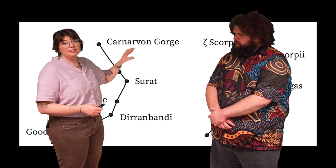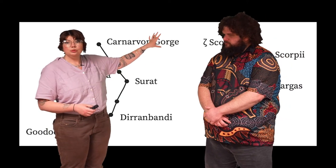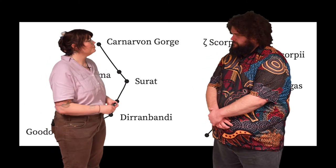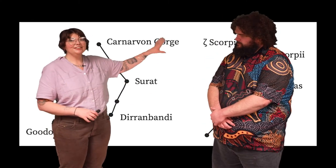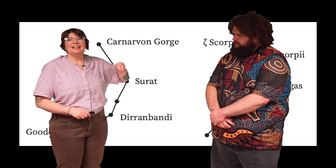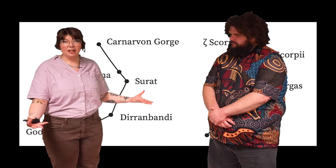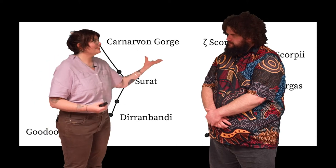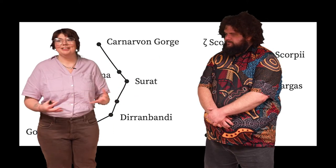Now this connects again, Gaduga to Carnarvon George. And interestingly, the traditional waypoints that the Gamilari and the Yuliai people would use, they've become towns and cities, all based off this one star map that was used by these communities.